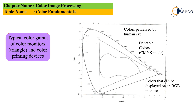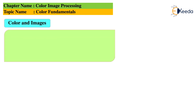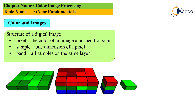The color gamut diagram has corners designated R, G, and B. The diagram shows colors perceived by the human eye, printable colors (by the CMYK mode — a color model to be covered in a subsequent lecture), and colors displayable on RGB monitors. Regarding color and images: the structure of a digital image is composed of pixels. In color images, the sample represents one dimension of the pixel and the band designates all samples on the same layer, resulting in a stack of red, green, and blue planes.